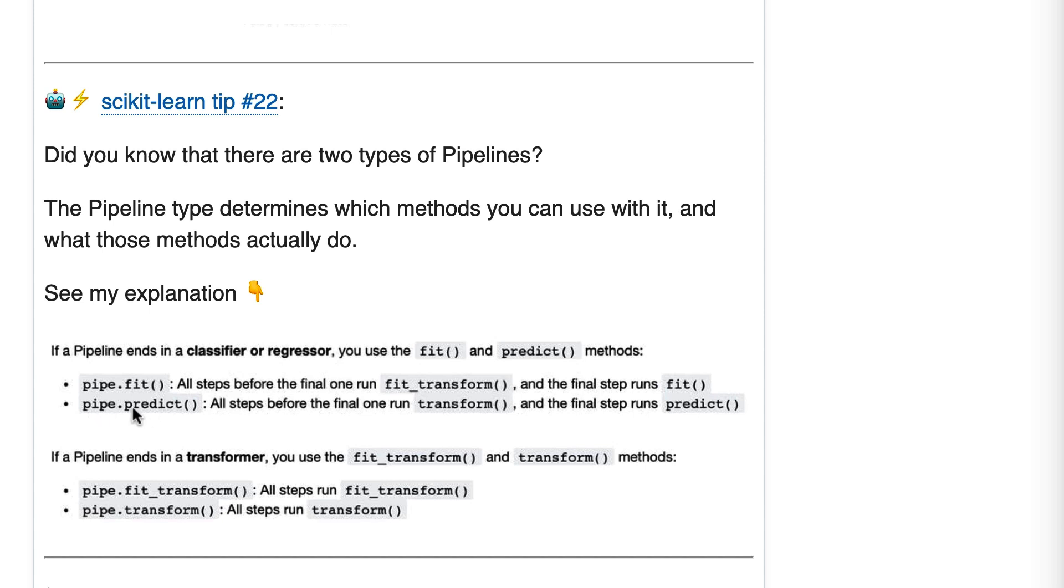And when you run pipe.predict under the hood, it just runs transform. And that's important for many reasons, including preventing data leakage.